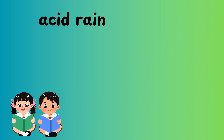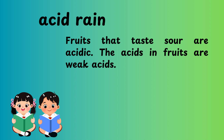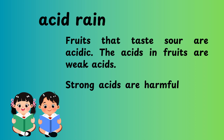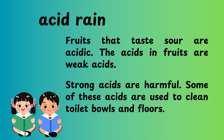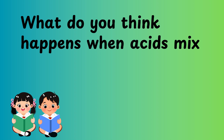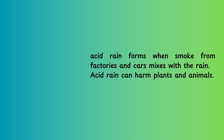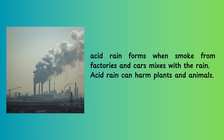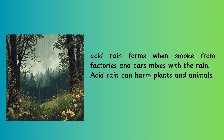Acid rain. Fruits that are sour are acidic. The acids in fruits are weak acids. Strong acids are harmful. Some of these acids are used to clean toilets, bowls, and floors. What do you think happens when acid mixes with rain? Acid rain forms when smoke from factories and cars mixes with the rain. Acid rain can harm plants and animals.